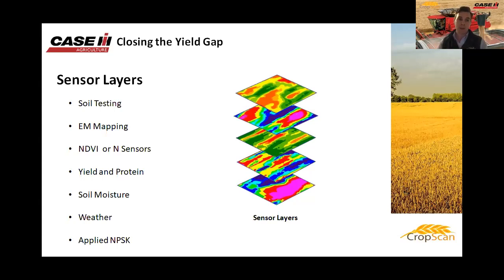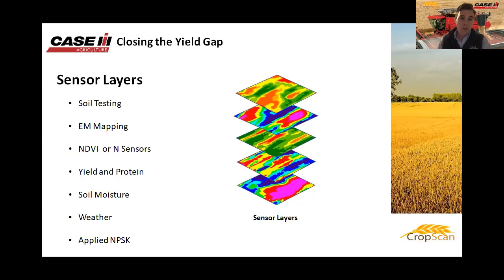Once we can look at that yield and protein layer, that's giving us the feedback loop to ask: are the management changes we're employing actually having a positive outcome? Are we doing better this year than last year? That's what it's all about — setting the system up to do better this year than you did last year. We can't control the weather, but we can control the inputs we're applying. Critically, N, P, K, and S — nitrogen, phosphorus, sulfur, and potassium — are key macronutrient drivers of crop performance.